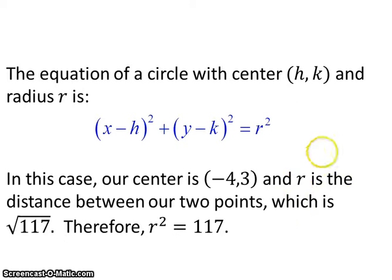So our r is going to be the square root of 117, but for this formula, we actually need r squared, and we know what r squared is. That's just 117.